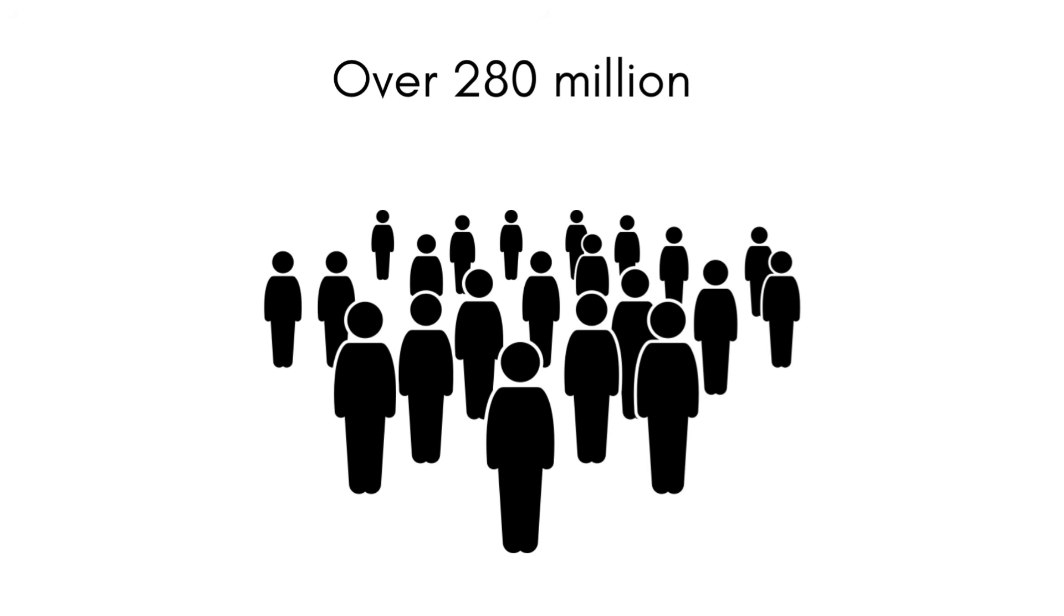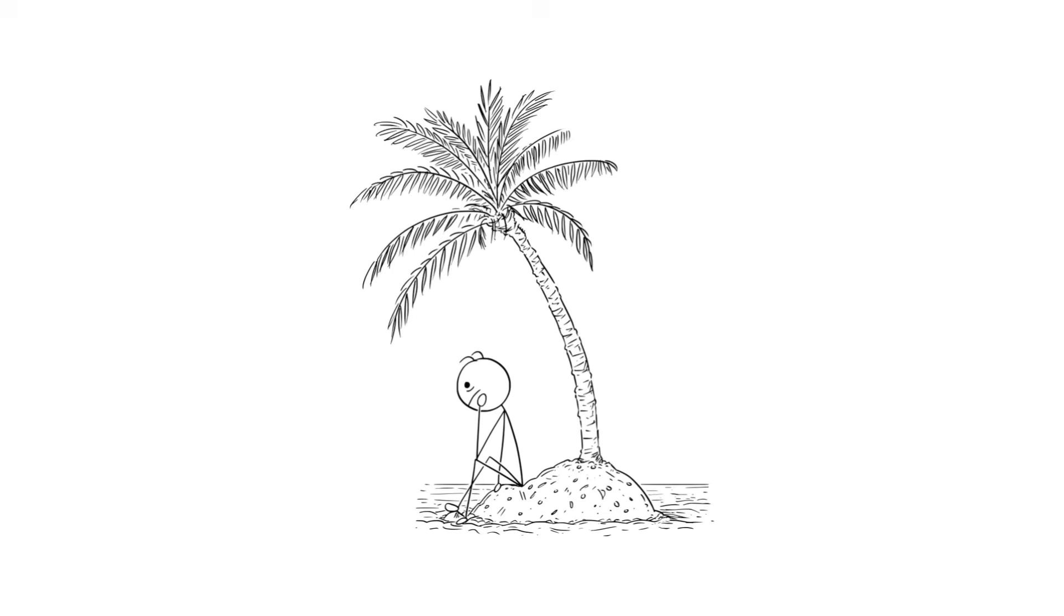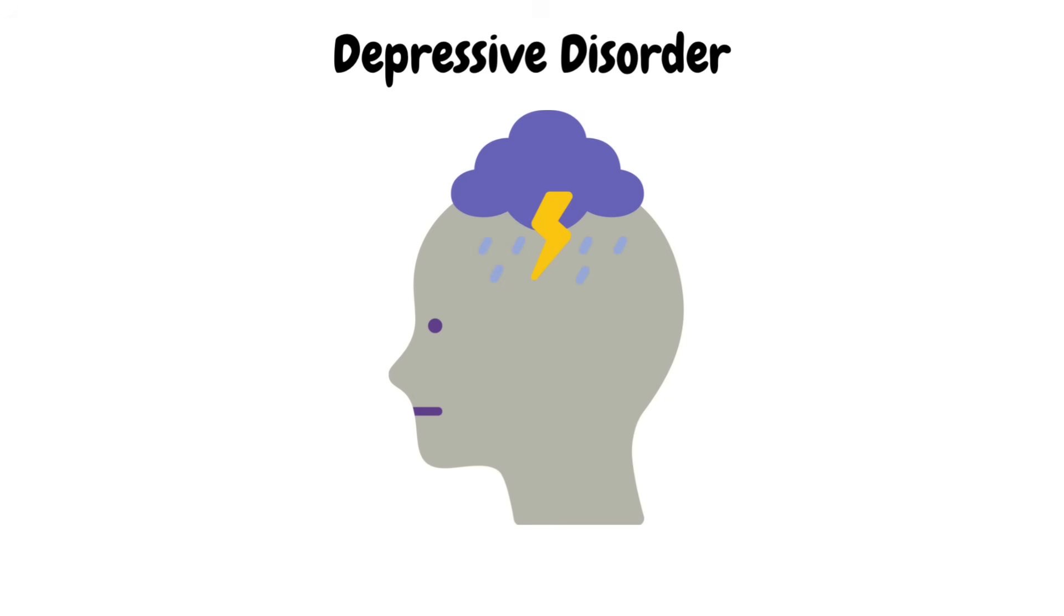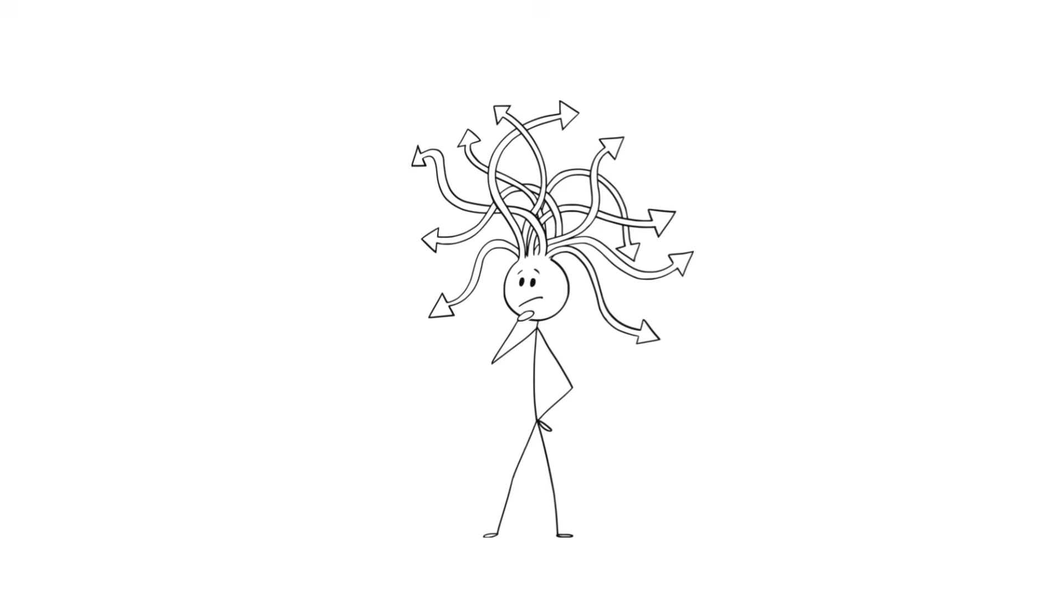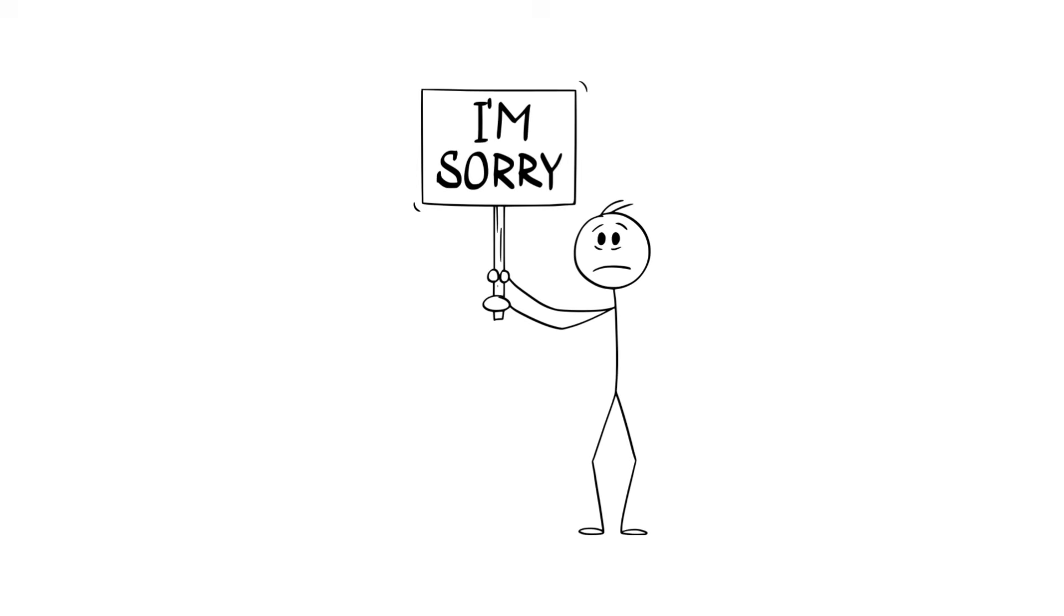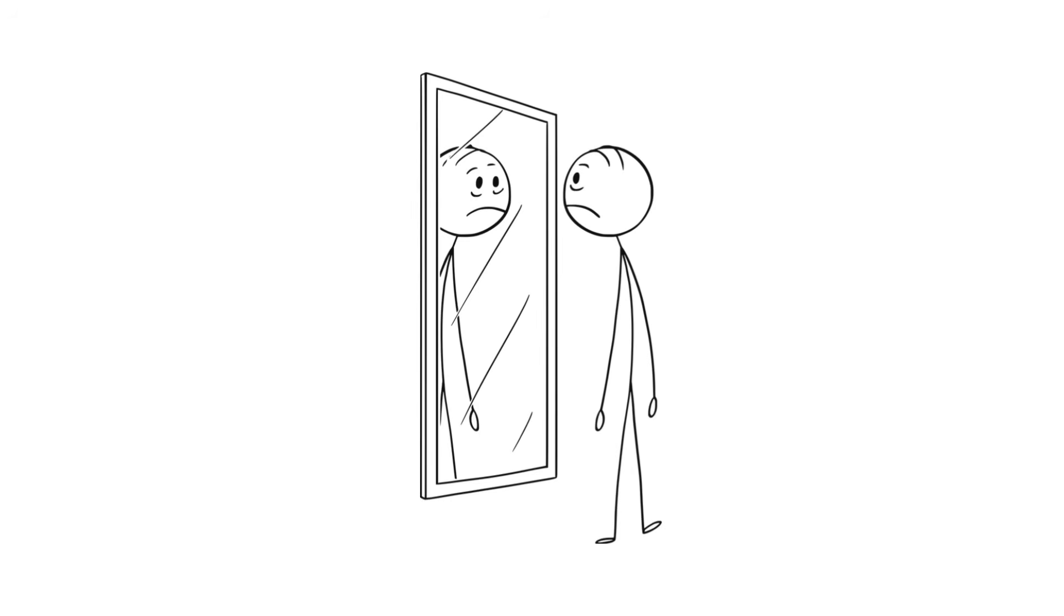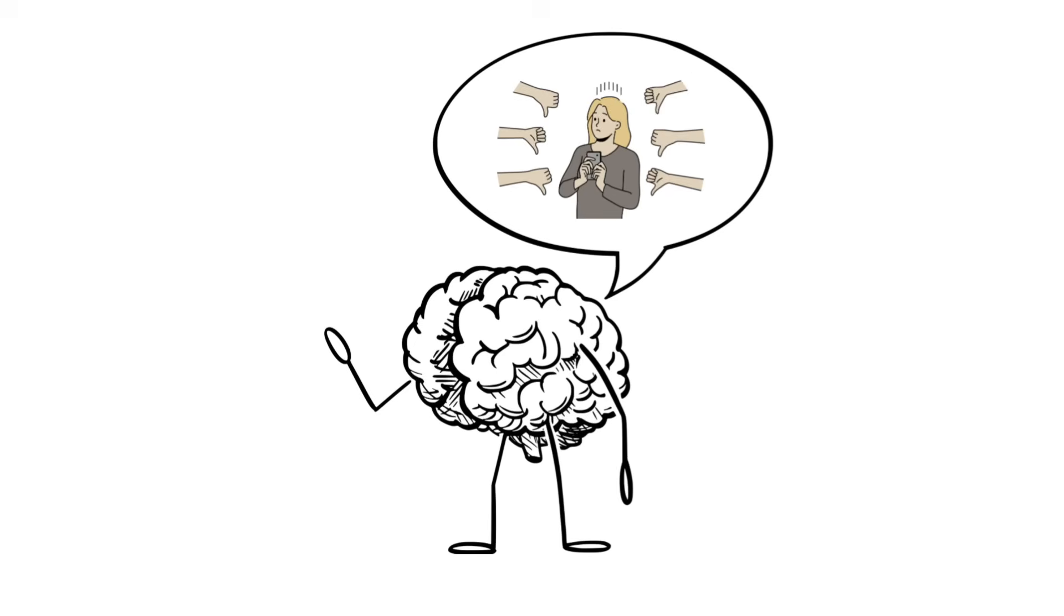Over 280 million people worldwide are stuck in this emotional fog. It doesn't always look the same. Some people smile through it while others isolate themselves completely. People with depression often become their own critics, overthinking every mistake and feeling guilty for things that aren't even their fault. It's like living with a negative sports commentator in your head, narrating your every move.